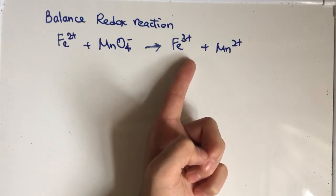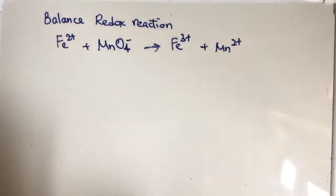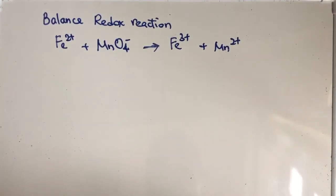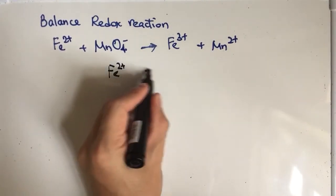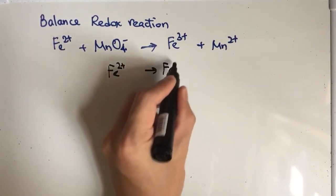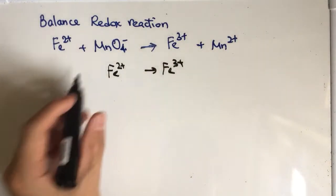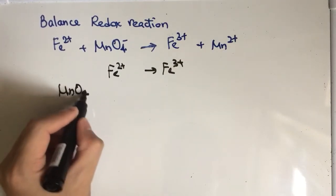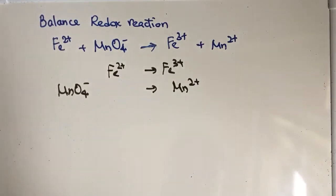We can use the ionic half-equation method. So first of all, you can separate it into two different ionic half-equations. The first one will be Fe2+ becomes Fe3+, and for the second equation, it will be permanganate ion becomes Mn2+. So first of all, you have to balance the ionic half-equations.